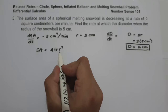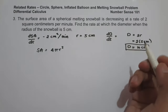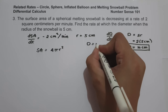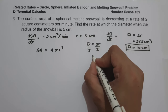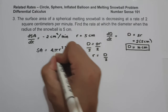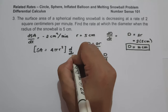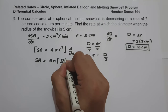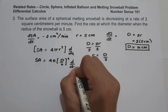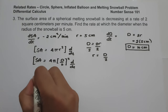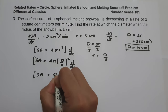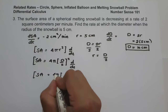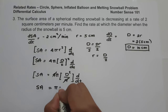Instead of substituting r equals 5, we rewrite r in terms of diameter. Since d equals 2r, we get r equals d/2. Substituting into the surface area formula: SA equals 4π times (d/2)² equals 4π times d²/4. The 4 cancels, giving SA equals πd².